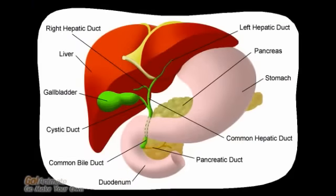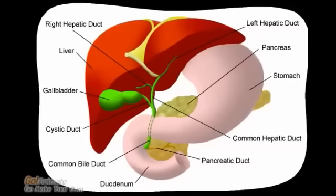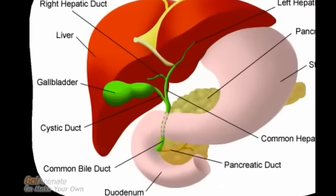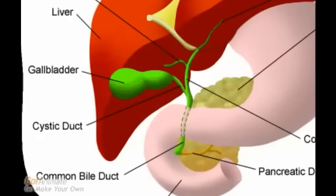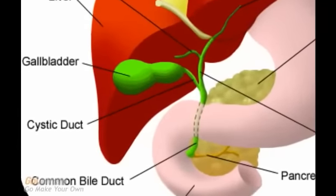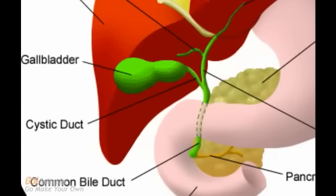Bile is produced continuously by hepatocytes. Half the bile produced runs directly from the liver into the duodenum via a system of ducts, ultimately draining into the common bile duct. The remaining 50% is stored in the gallbladder. In response to a meal, this bile is released from the gallbladder via the cystic duct, which joins the hepatic ducts from the liver to form the CBD that opens through the ampulla of Vater into the duodenum.